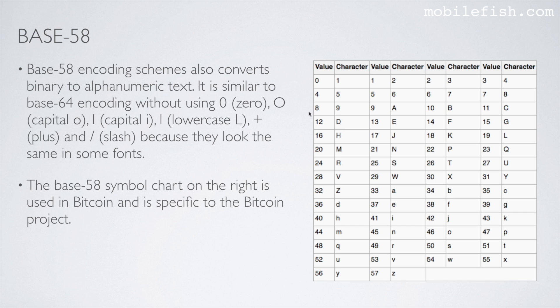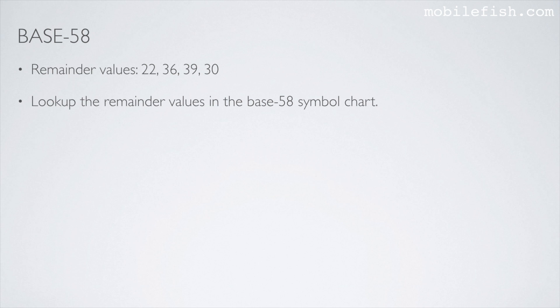This is the base58 symbol chart. I have explained this in the previous video, so I will not do this again. What we are going to do next is use the remainder values and find the corresponding character. We look up the remainder values in the base58 symbol chart, and CAT base58 encoded equals pdgx.